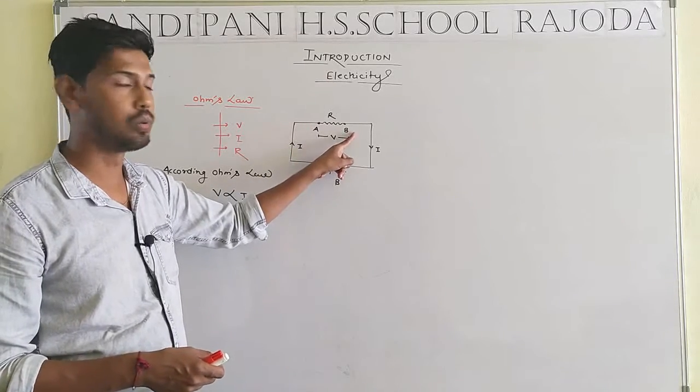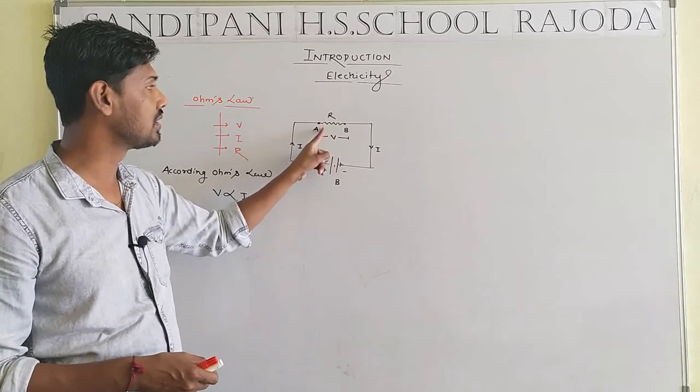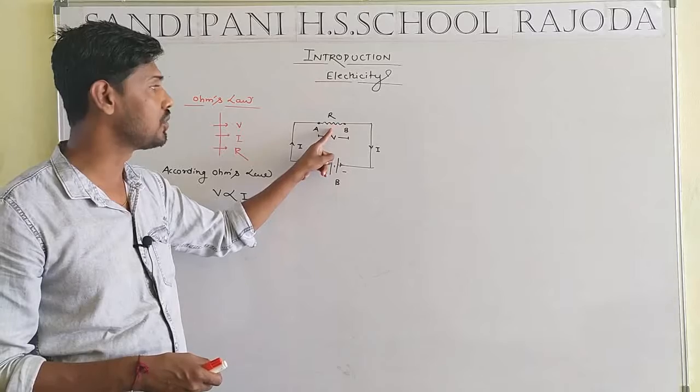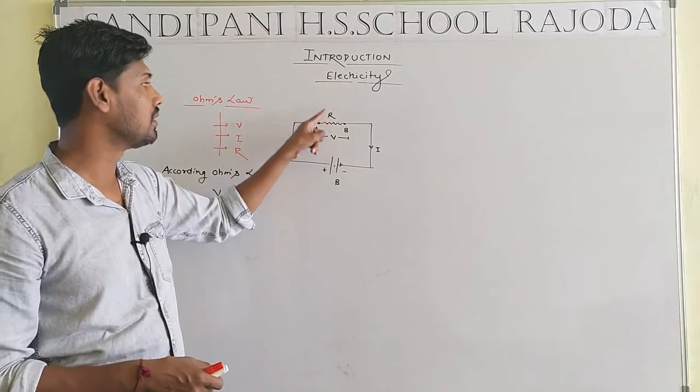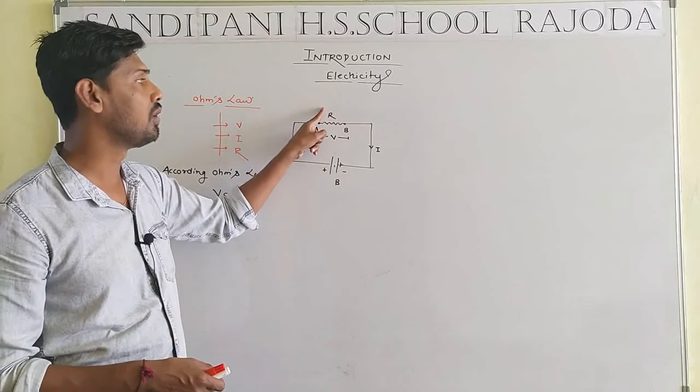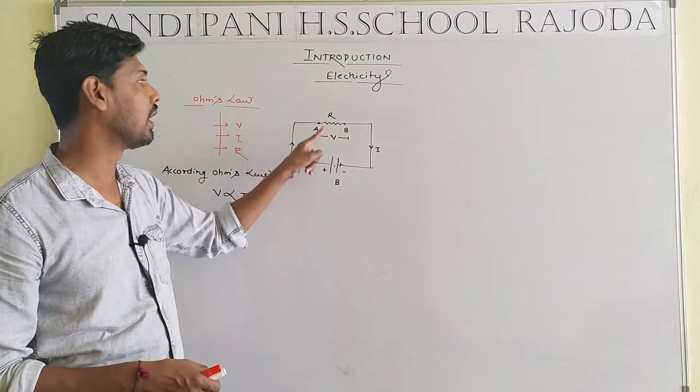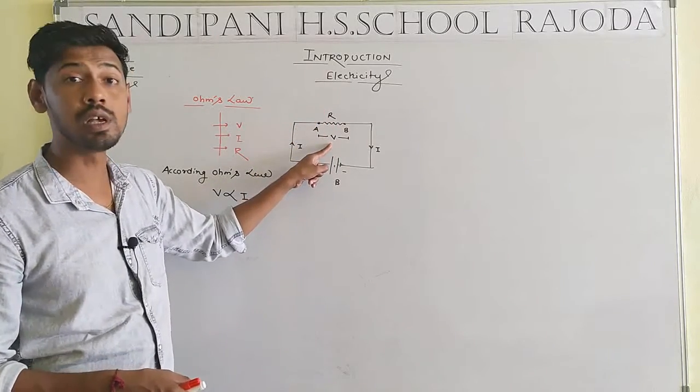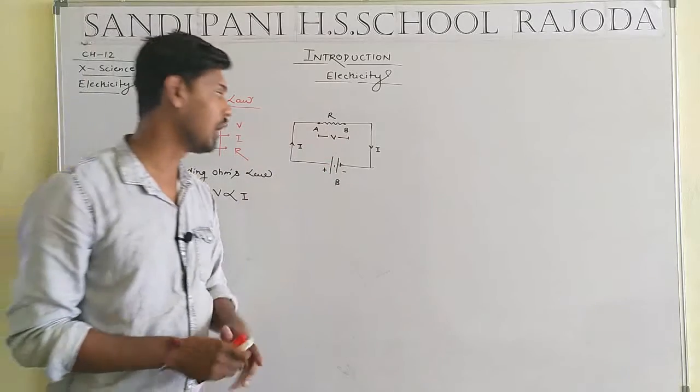A and B are two terminals which consist of an insulating copper wire. The resistance of the wire will be equal to capital R, and V is the voltage.